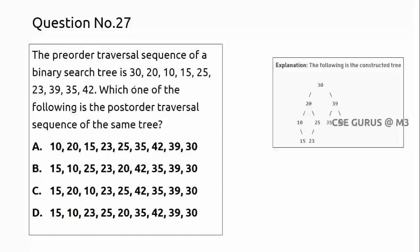Question 27: A pre-order traversal of a binary search tree is given. Which is the post-order traversal? To find post-order from pre-order, we use the BST property: in-order traversal of a BST always gives elements in ascending (sorted) order. So sort the elements to get the in-order, then use both pre-order and in-order to reconstruct the tree.